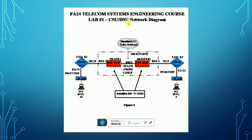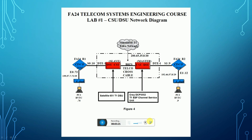This figure shows a telecom system engineering course CSU/DSU setup. This is the hub and the slave DSU/CSU. This is the satellite link of the slave DSU/CSU, and this is the master CSU/DSU. Channel Service Unit CSU and Digital Service Unit DSU.